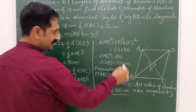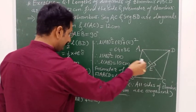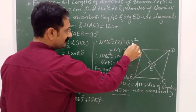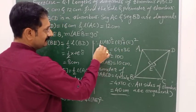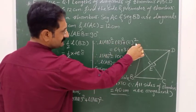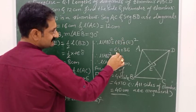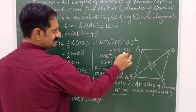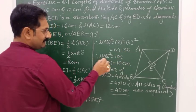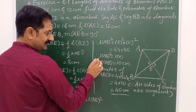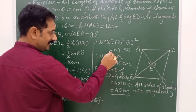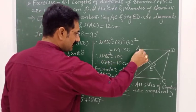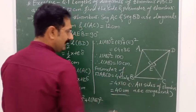BE is 8, so BE² is 64. AE is 6, so AE² is 36. Therefore AB² equals 64 plus 36, which is 100. Taking the square root on both sides, AB equals the square root of 100, so AB is 10.